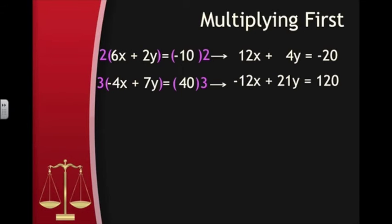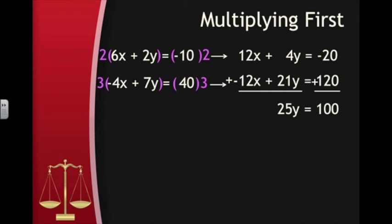Now we have the opposite coefficients we needed. When we add the equations together, notice the x's will cancel out to 0, leaving only a 25y on the left side. Adding the right sides together gives us negative 20 plus 120, which is 100. Now we have 25y equals 100, an equation with only one variable, so we can divide both sides by 25 to get y equals 4.